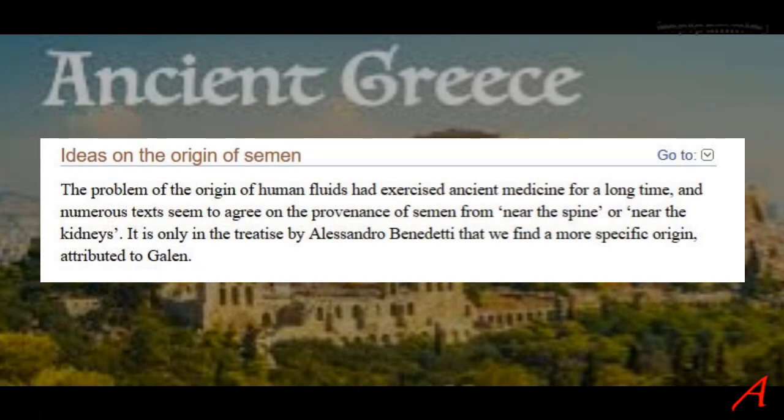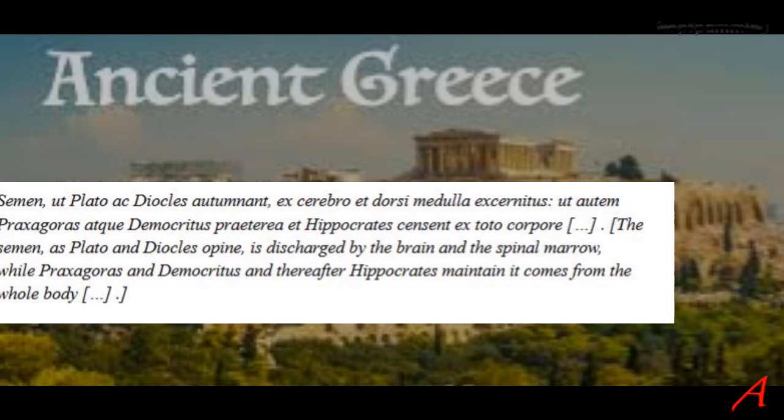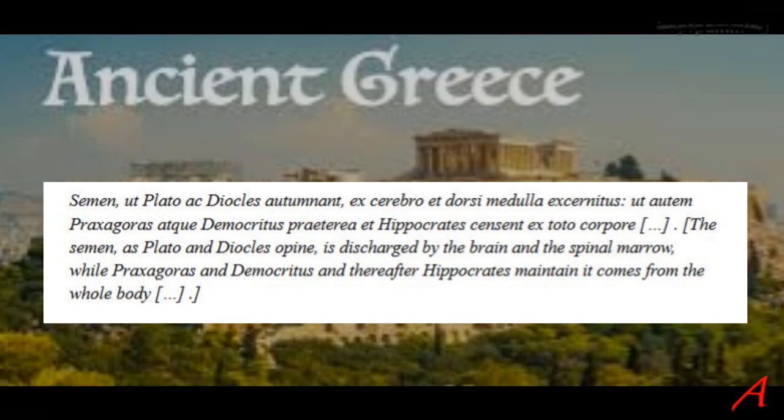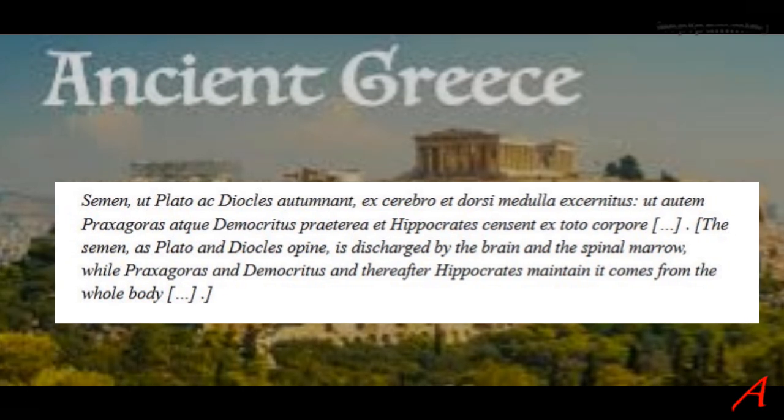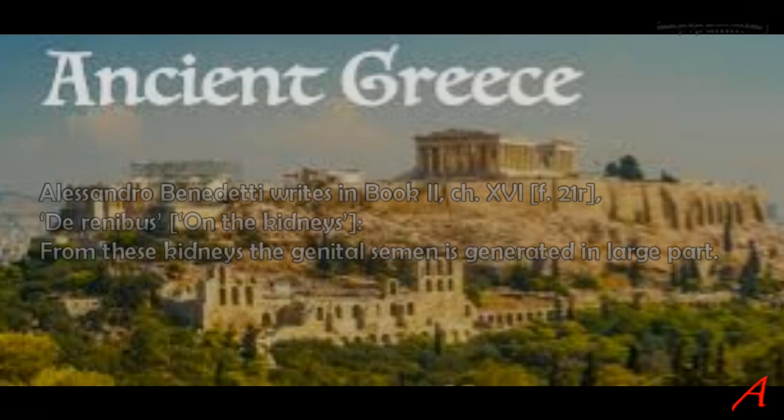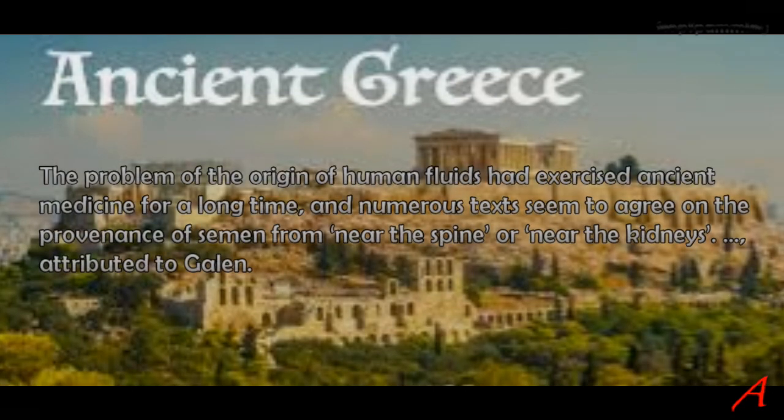Now, Galen, who's very well known, he writes and he quotes Plato and Diocles in Definitiones Medicae in volume 19. Semen, as Plato and Diocles opine, is discharged by the brain and the spinal marrow, while Praxagoras and Democritus and thereafter Hippocrates maintain it comes from the whole body. And then Alessandro Benedetti writes in his book 2, chapter 16, on the Renibus, in other words, on the kidneys, from these kidneys, the genital semen is generated in large part. And then for many centuries, it was this opinion that the human fluids, and this was in ancient medicine for a long time, they agree on the provenance of semen from near the spine or near the kidneys. And this is then attributed to Galen.